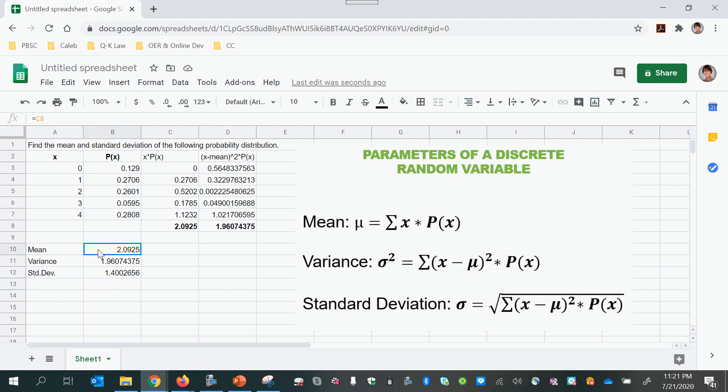And the convention is to round these to one place more than the original values that the random variable could take. And notice I didn't say data values because this is not data. We're under the umbrella of probability now rather than empirical.